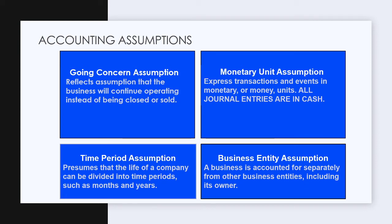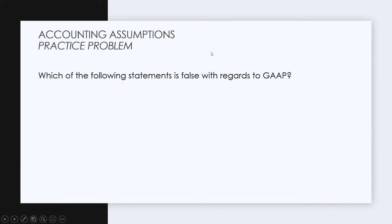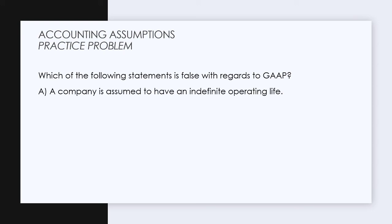Make sure you know these four assumptions — they're so useful for understanding business. I'm going to go to a question on how you might see this on an exam to help reinforce your knowledge. So: which of the following statements is false with regards to GAAP? Answer A: a company is assumed to have an indefinite operating life. Well, we know this is true — this is the going concern assumption.